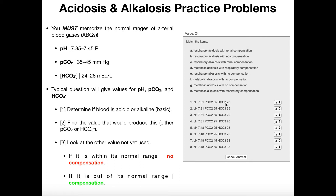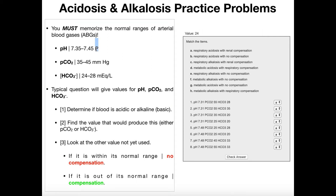We're going to do three examples in this video, but before we do that, we actually need to look at the normal values for pH, pCO2, and bicarbonate. The normal pH range is between 7.35 and 7.45, and that's the pH of the blood. Sometimes you'll see the unit 'p', but technically pH has no units — 7.35 to 7.45.